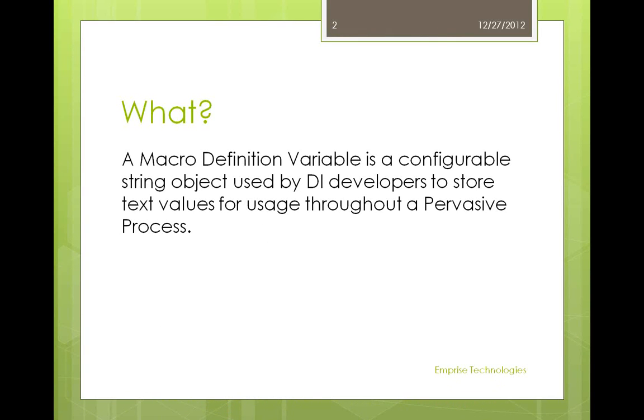What is a macro definition variable? A macro definition variable is a configurable string object used by Data Integrator developers to store text values for usage throughout their Pervasive processes. These configurable strings are defined and accessed using a meaningful name.